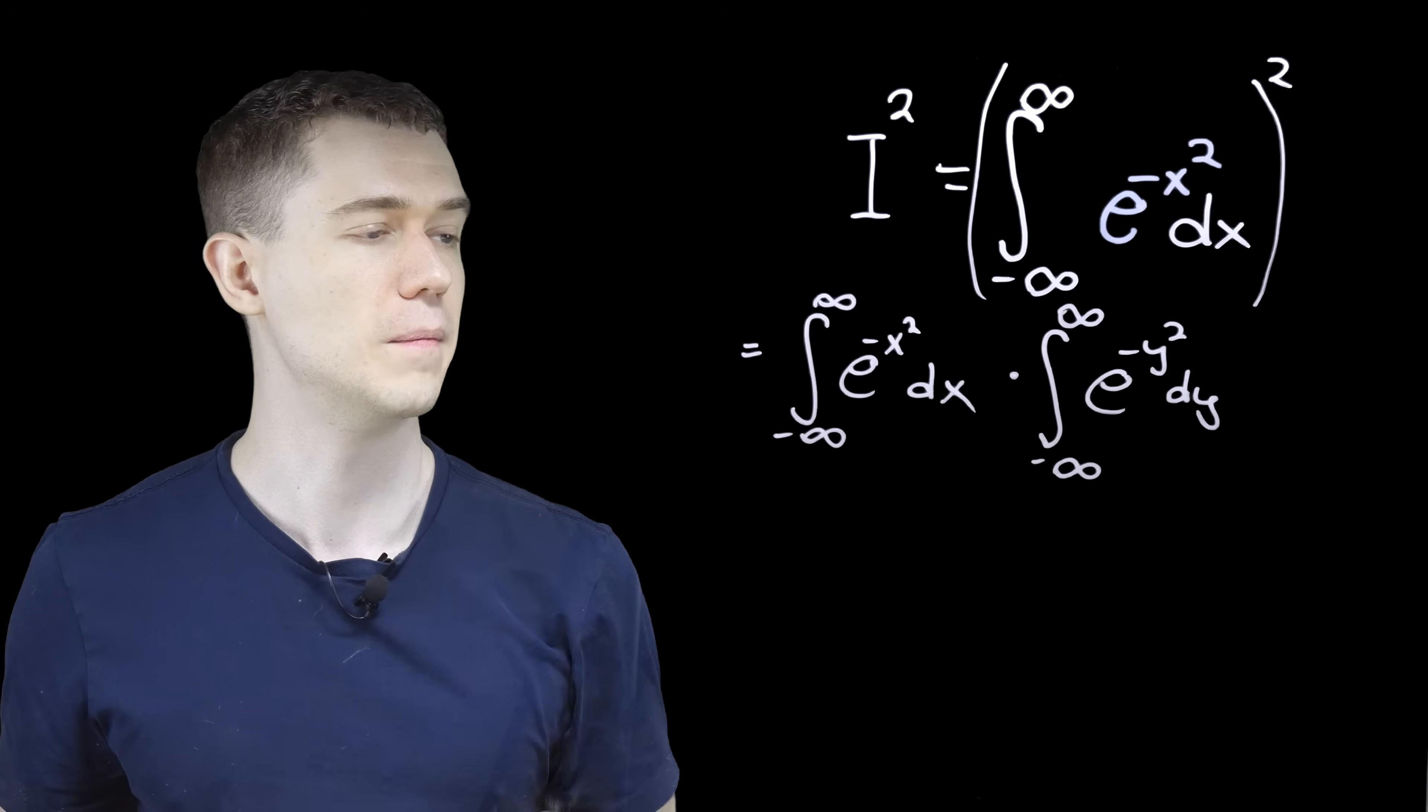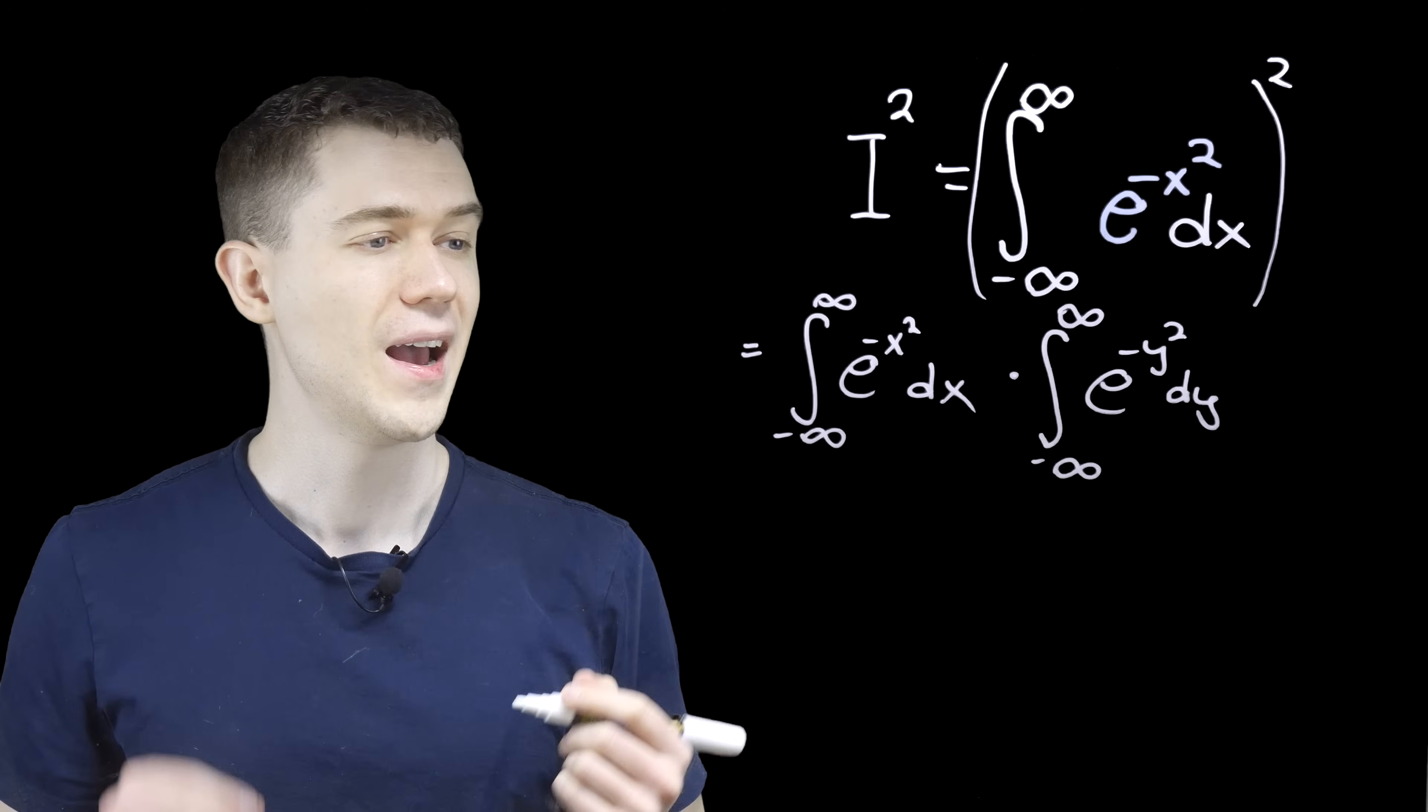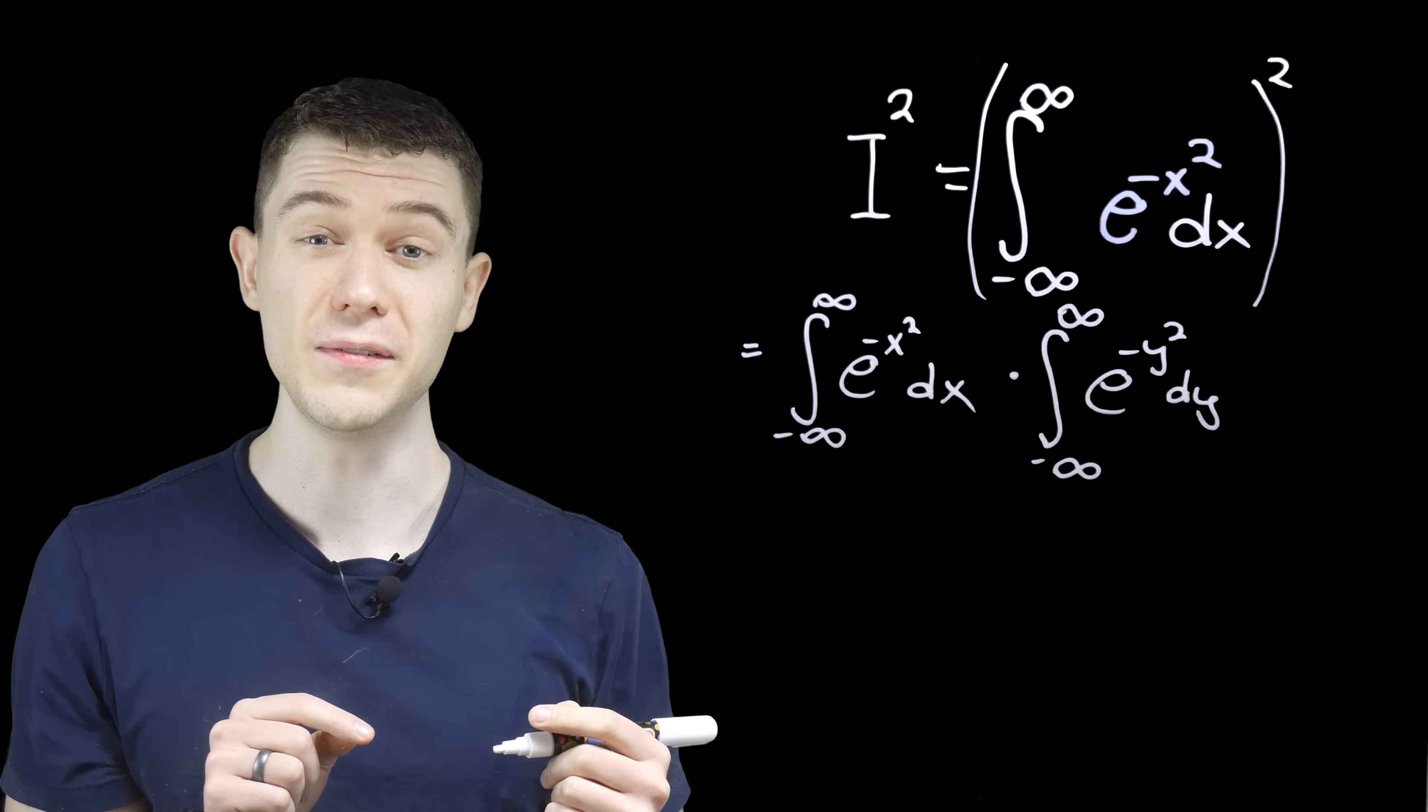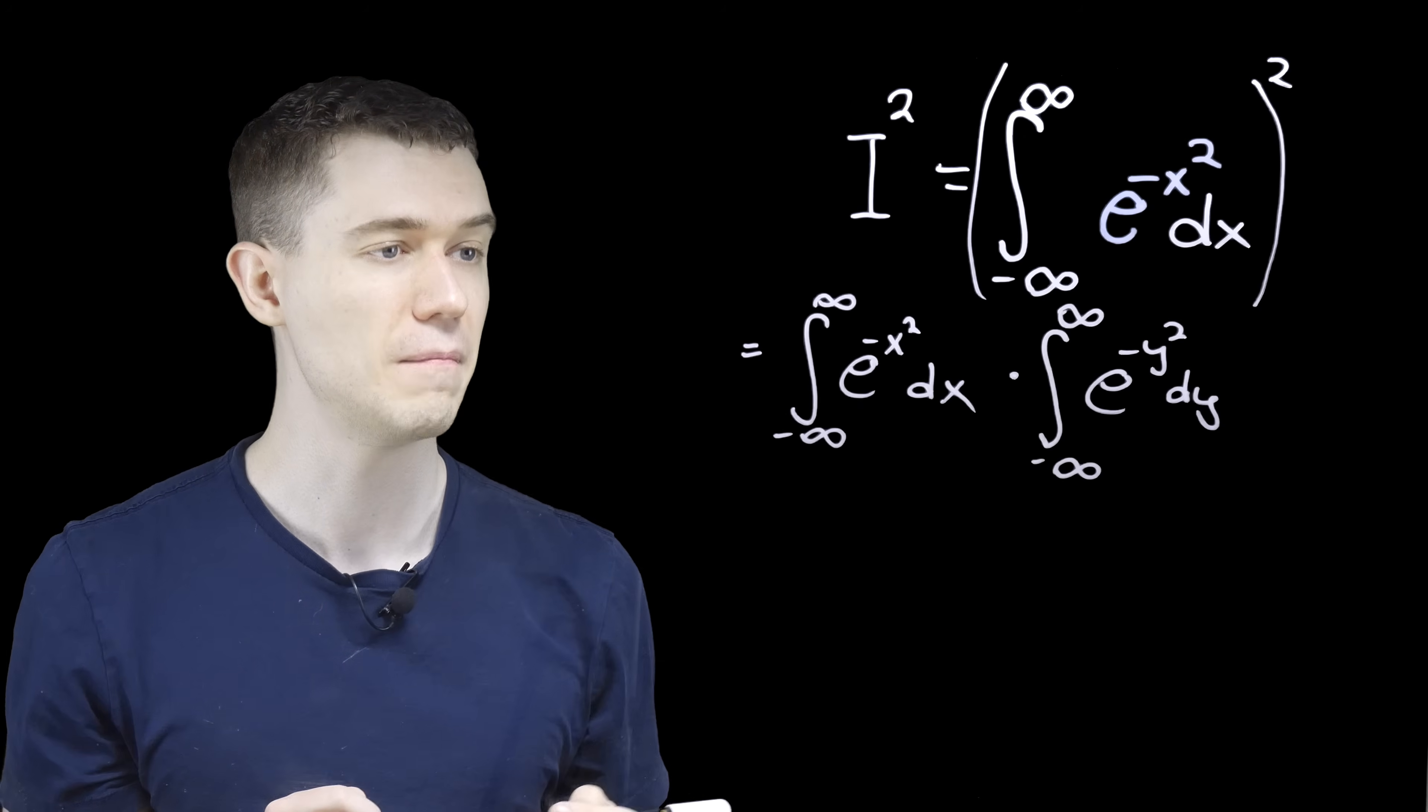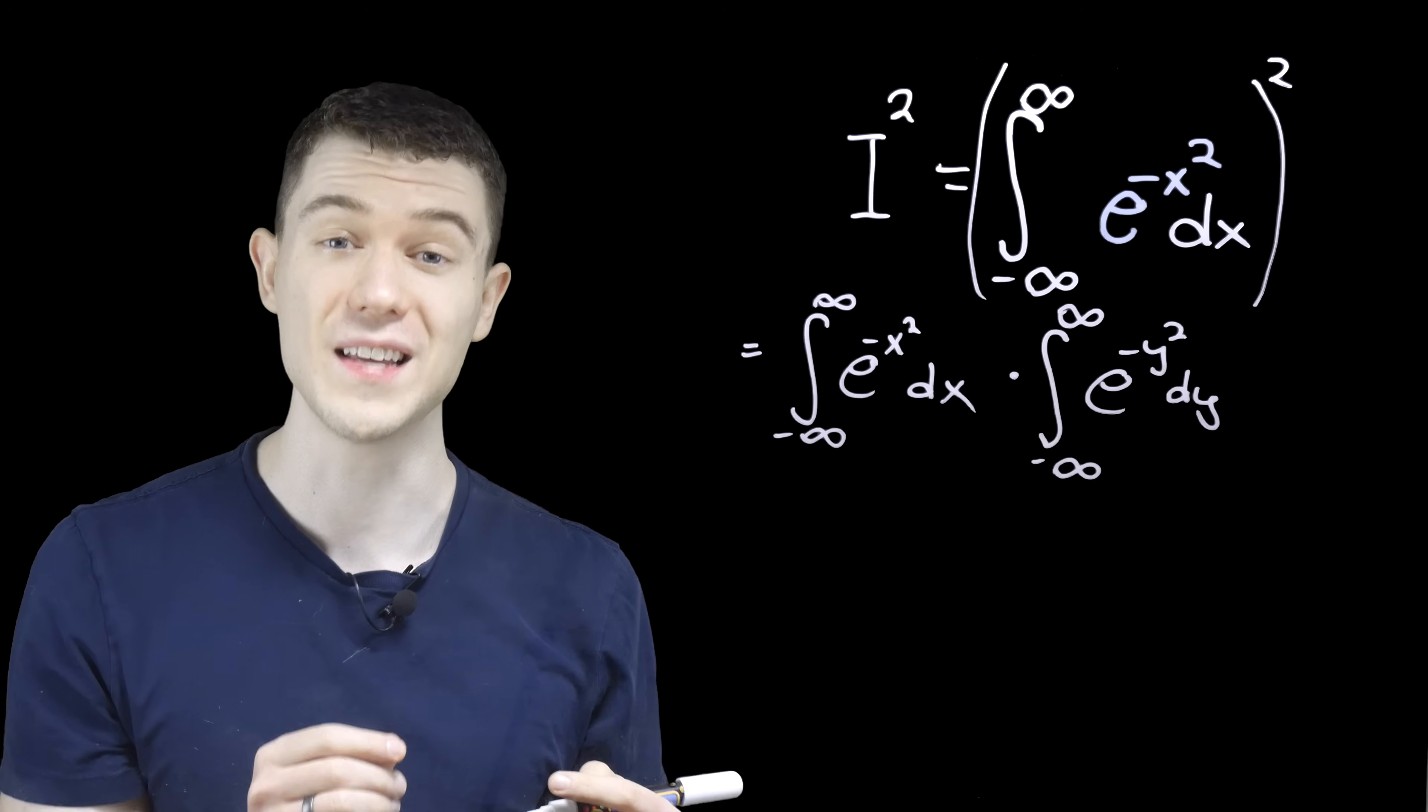And these are being multiplied. But it's the same quantity, they're both i, so this is i squared. And actually, since both the letters are completely different here, and they have the same definite bounds here, minus infinity to infinity, this is what's known as separable. These integrals are separable.